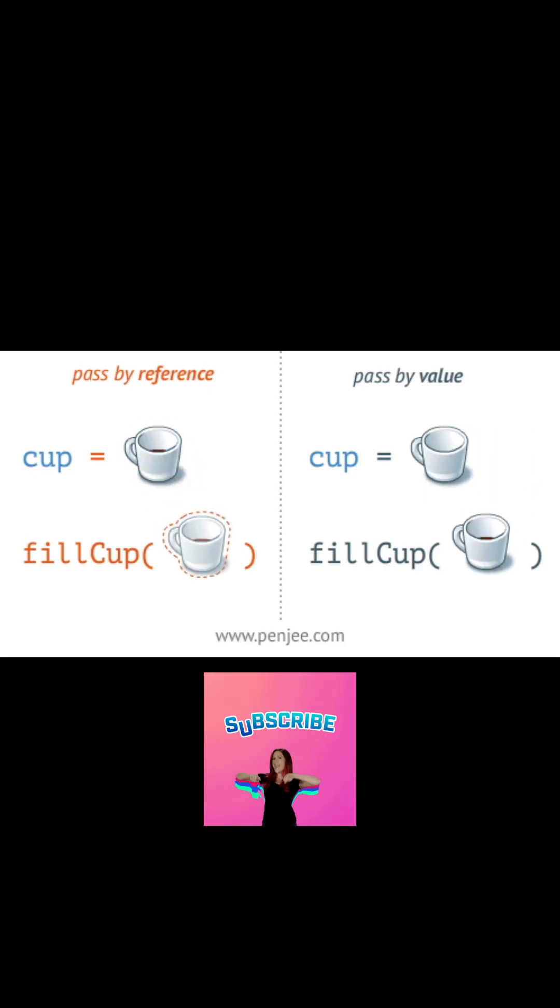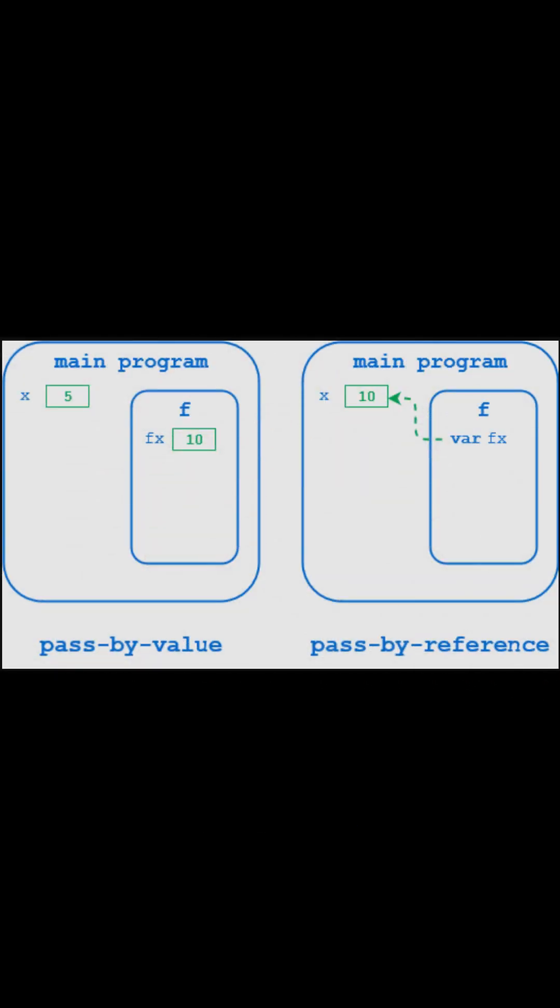The point to note here is that all parameters in the function are passed by reference. This means if you change what a parameter refers to within a function, the change also reflects back in the calling function. Thank you!